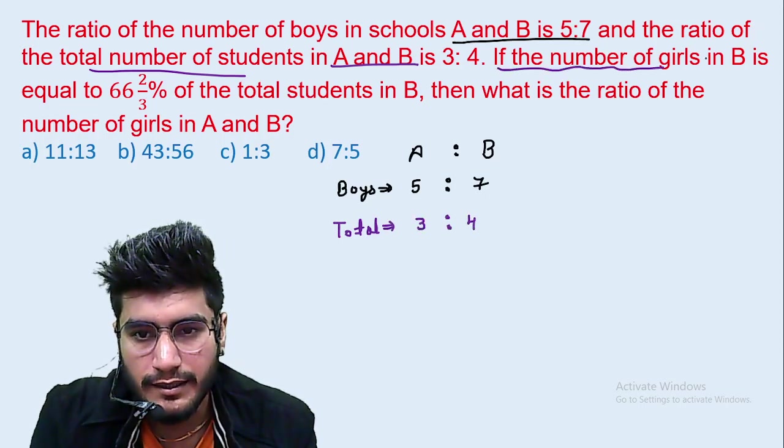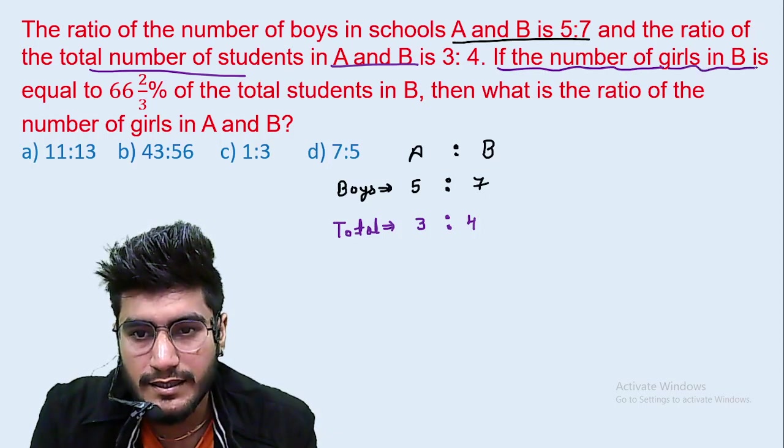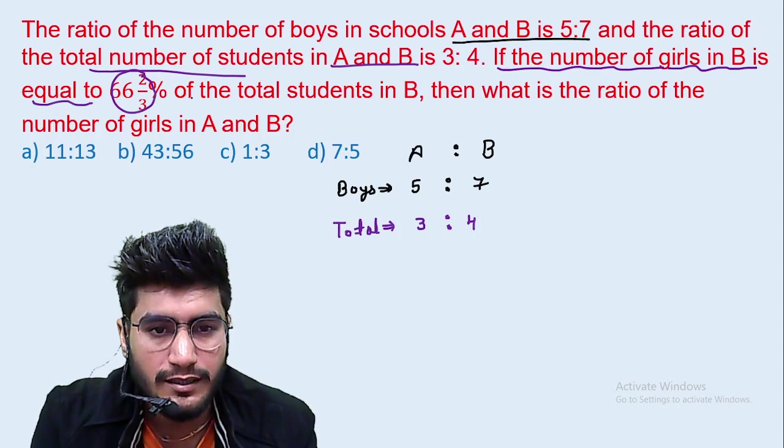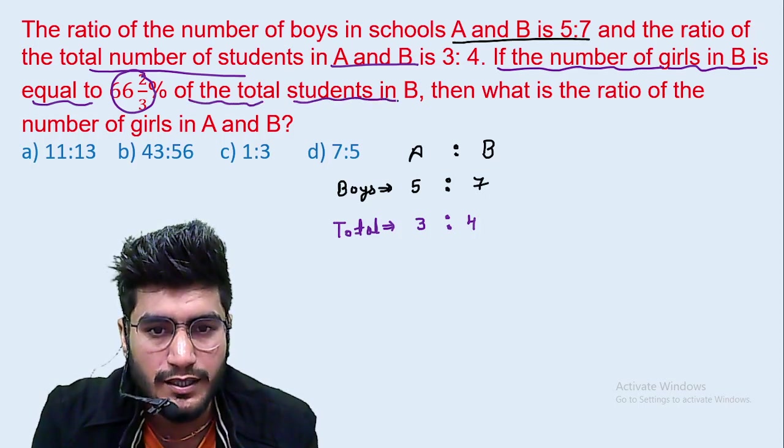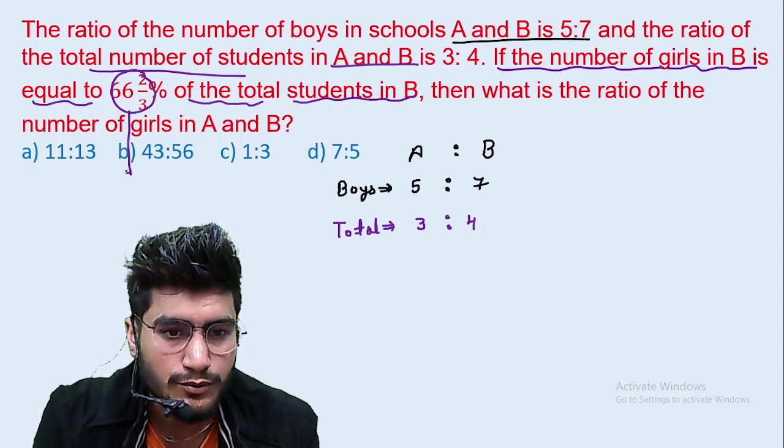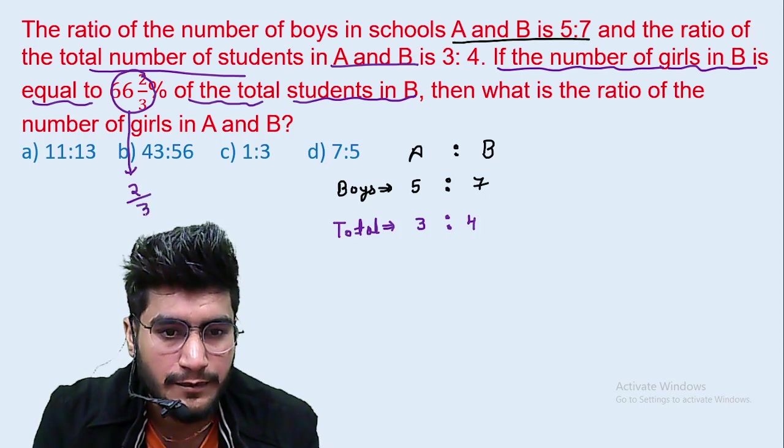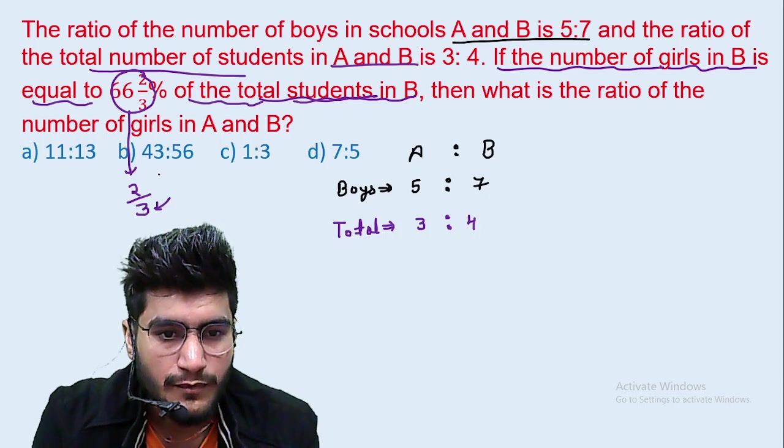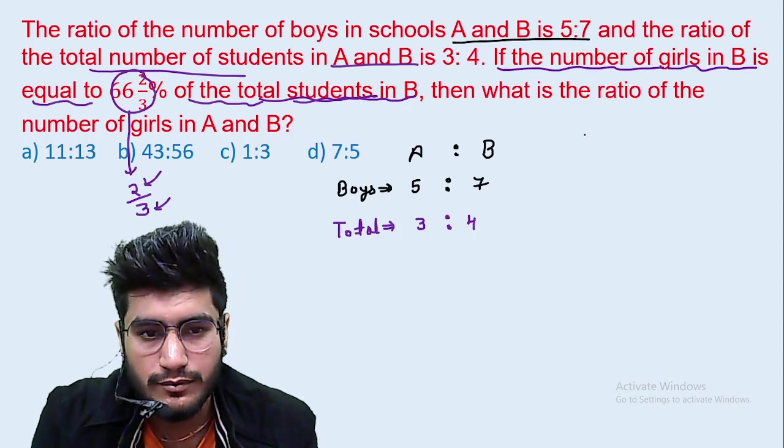After that, this is the most important line. If the number of girls in school B is equal to 66 and 2 by 3 percent of total students in B. 66 and 2 by 3 means 2 by 3. What does the line mean? What is the total student in B? If it is 3, what is the number of girls? The total number of girls is 2.